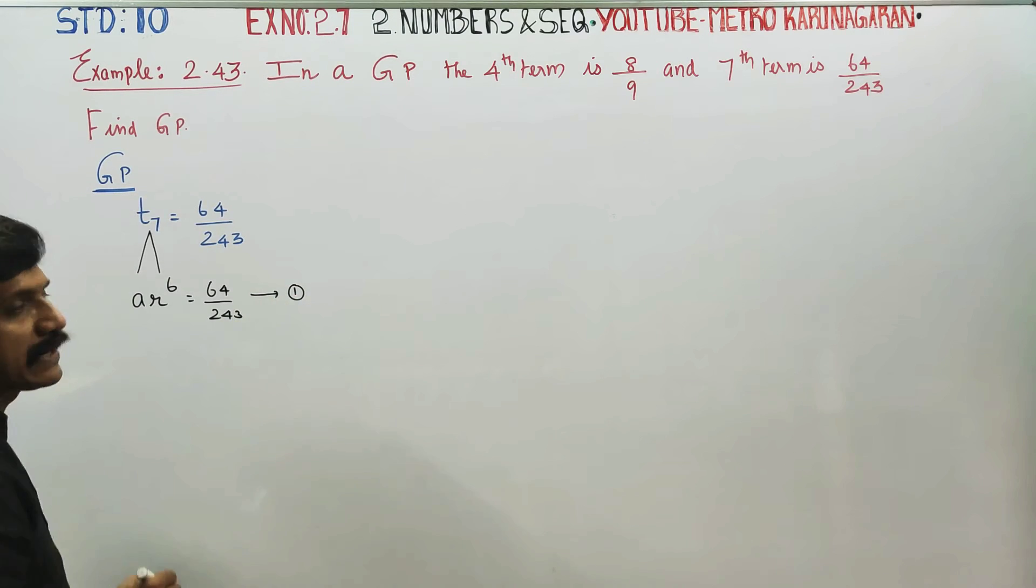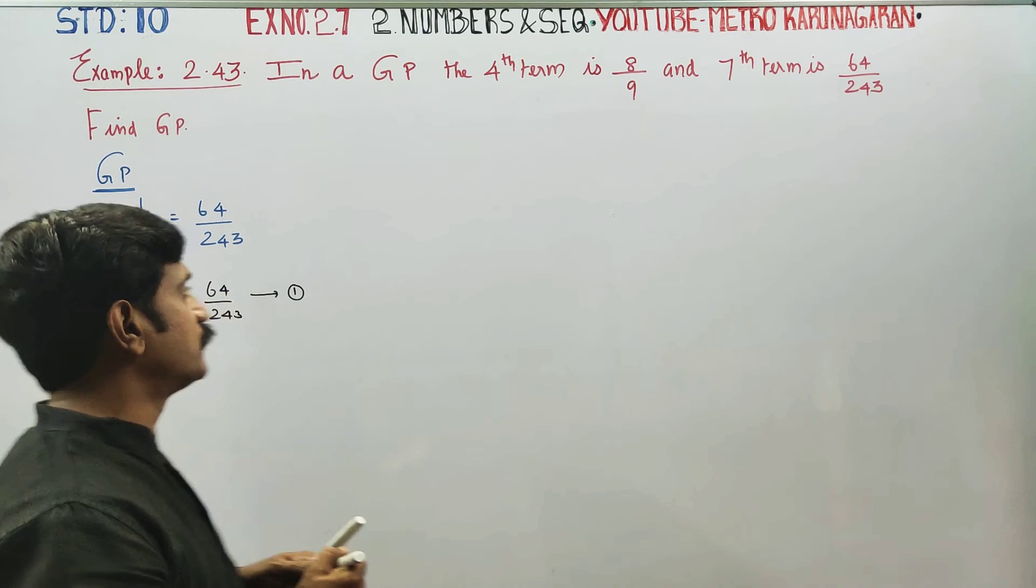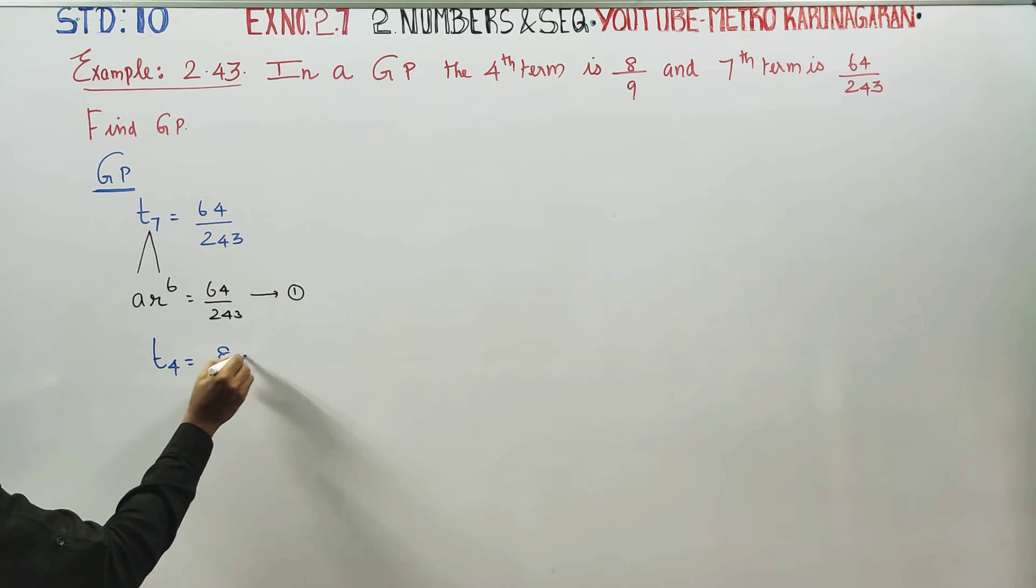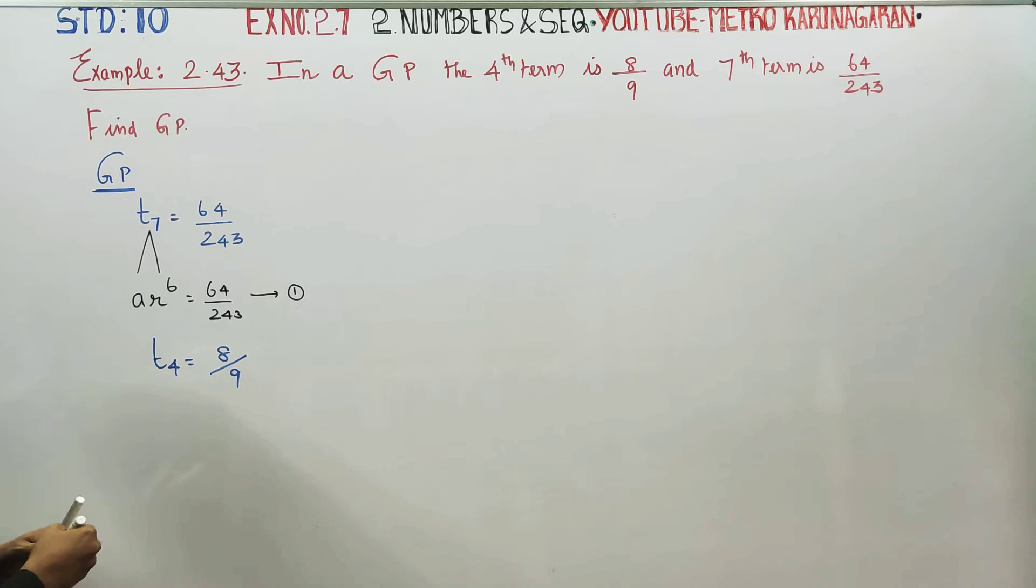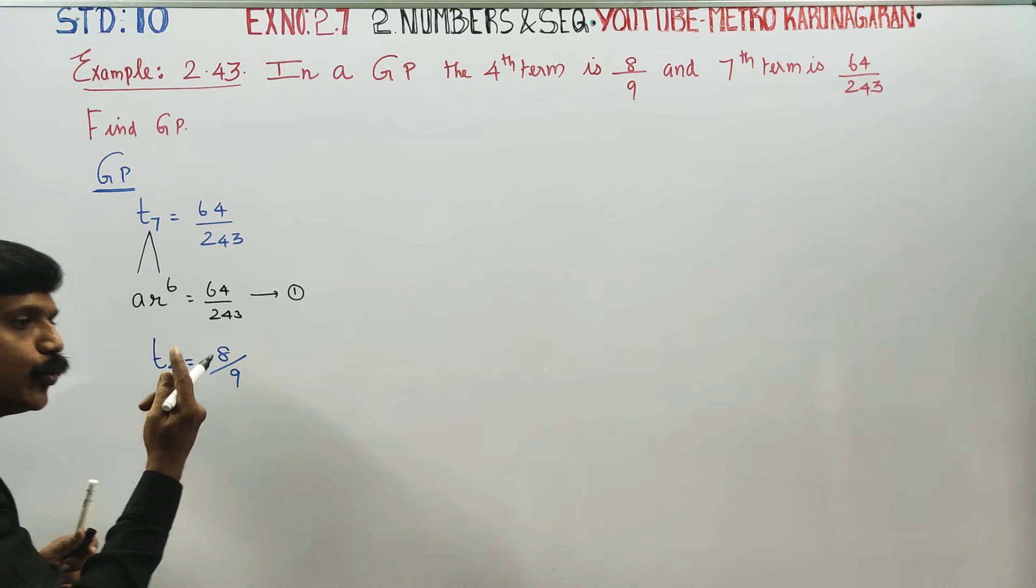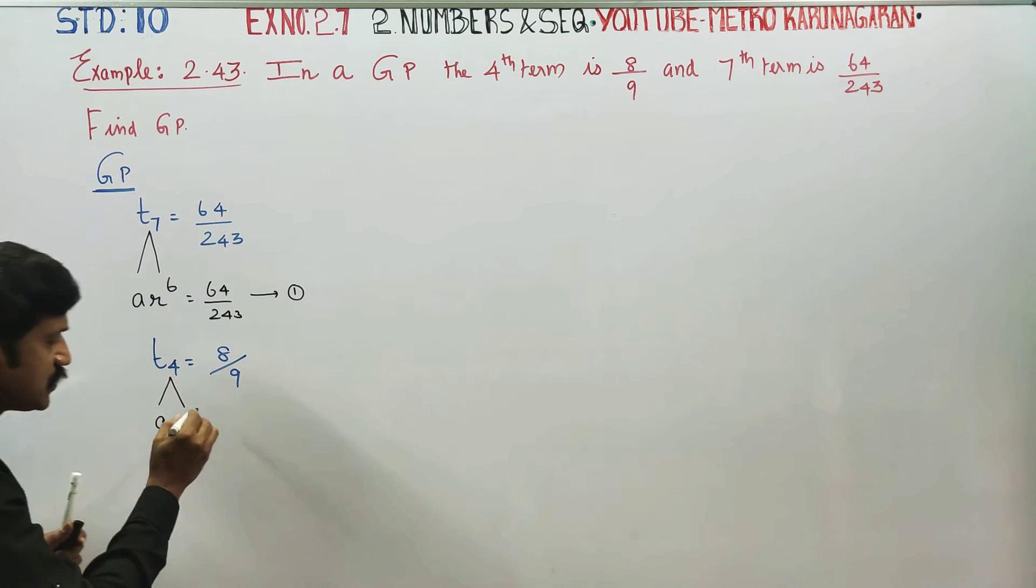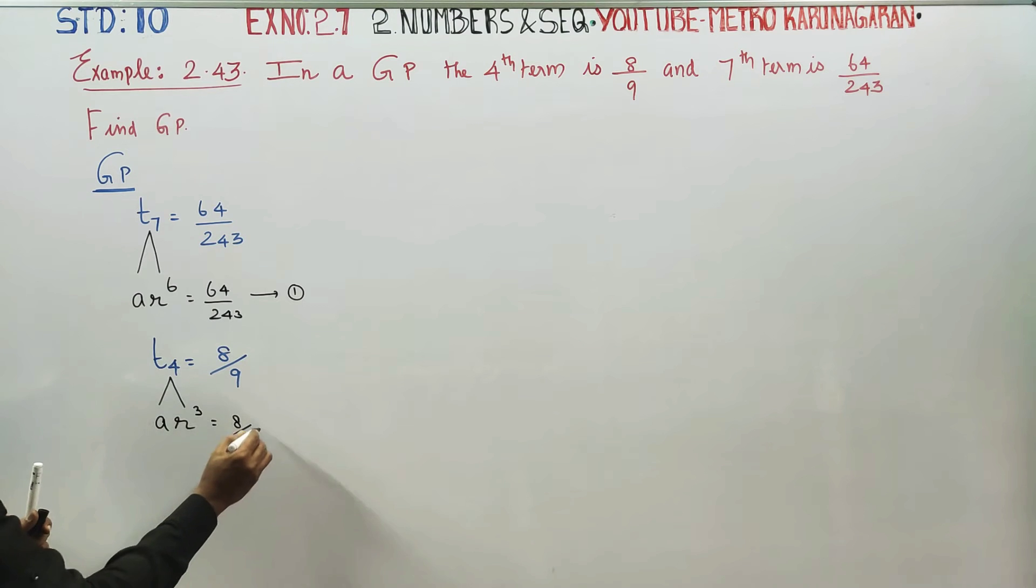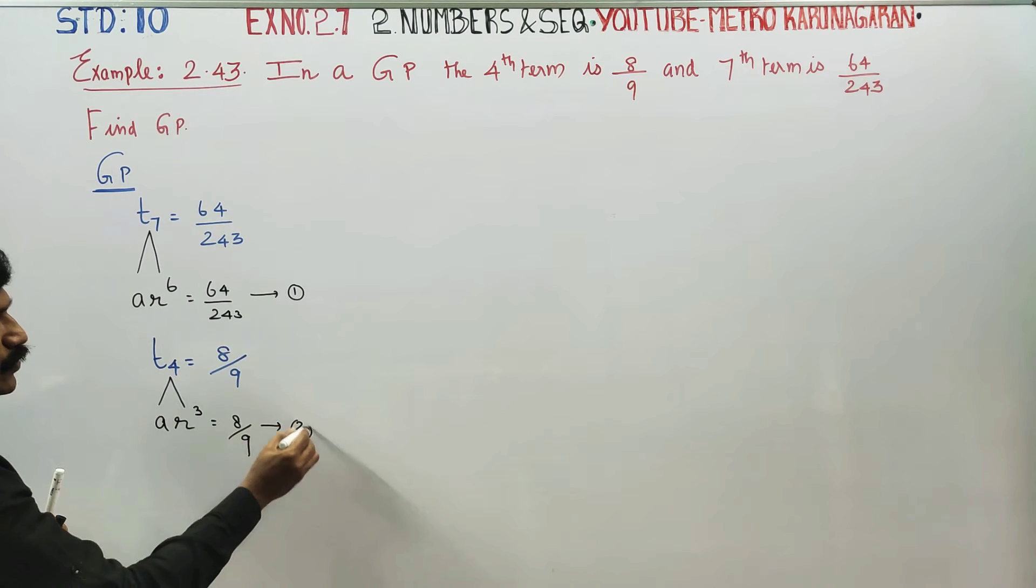Equation number 1. Fourth term is T4, T4 is equal to 8 by 9. Now I am going to do this form A or R, this term is equal to 8 by 9, equation number 2.